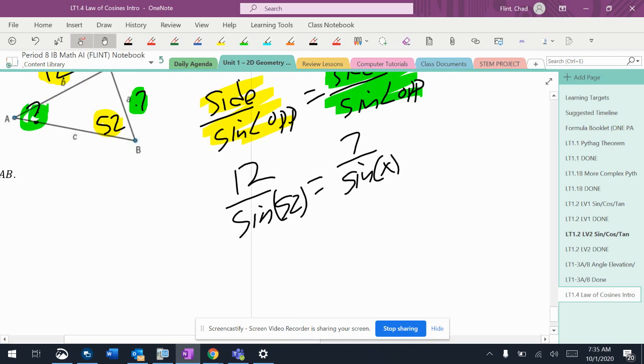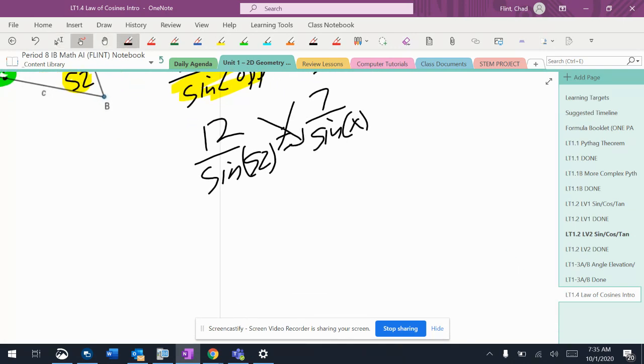So this is like the one example that we did in the beginning, where they're going to have to actually find the angle. So pay attention to this one. So 12 times sine of x equals 7 times sine of 52.